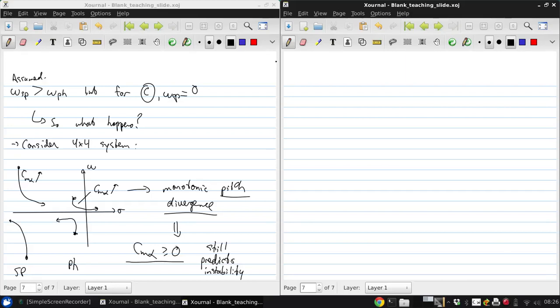To estimate Mw and Mq, we need expressions for Cmα and Cmq. These are going to have contributions from the wing, tail, and fuselage. So let's start with Cmα.